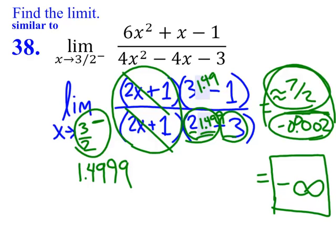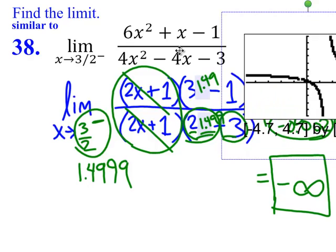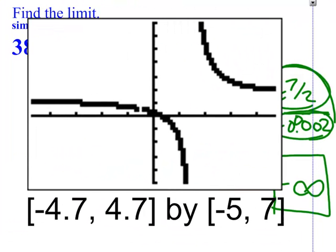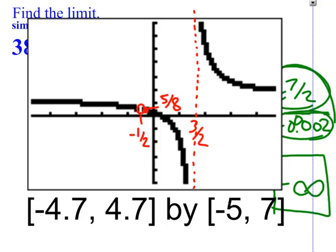Let's verify graphically. In the first problem, approaching x = −1/2 from either side leads to the same y value — the hole at 5/8. However, x = 3/2 is exactly where the asymptote is. Approaching from the left, the y value goes negative, heading toward negative infinity. Had we approached from the right, we would have gotten positive infinity instead.